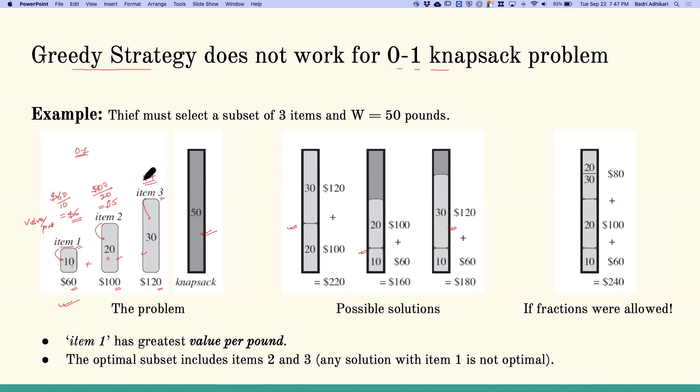Based on the greedy strategy, we will pick the item that has the highest value per pound. Because this is a 0-1 knapsack problem, we'll first put item 1 into the knapsack. Then the next item with the highest value per pound is item 2, which has $5 per pound. So we have item 1 and item 2 in the knapsack. The remaining is 20 pounds, but we can't fit item 3 into the knapsack. So we end up selecting this solution, which is not the optimal solution using greedy strategy. That's why greedy strategy will not work for solving this problem.